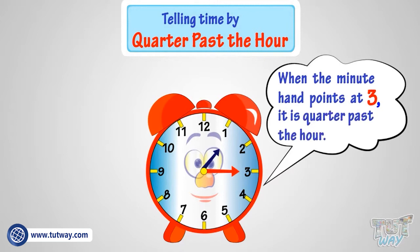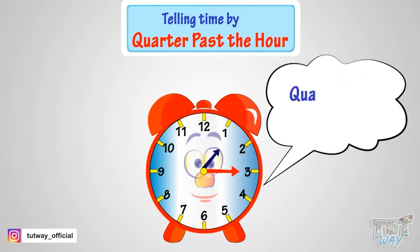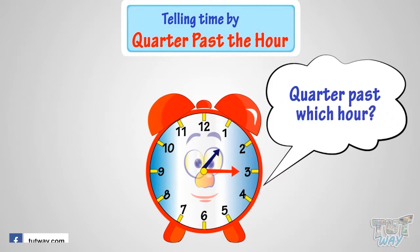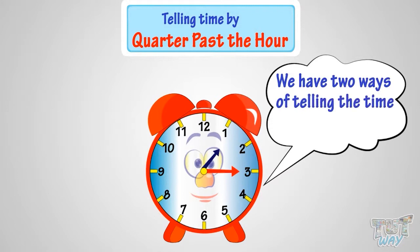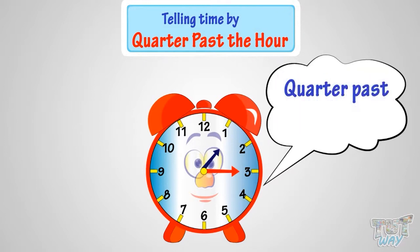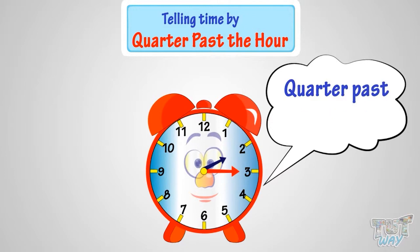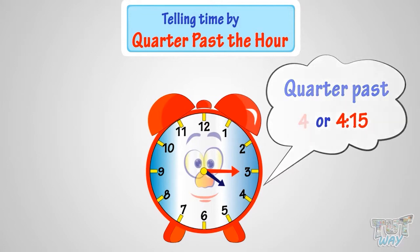So what have we learned? When the minute hand points at 3, it is quarter past the hour — specifically quarter past whichever hour the hour hand has moved a quarter way towards. We also have two ways of telling the time: quarter past 1 or 1:15, quarter past 2 or 2:15, quarter past 3 or 3:15, quarter past 4 or 4:15.